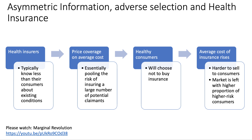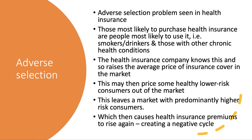If healthy consumers leave the market or don't enter it, you're left with a higher proportion of people with chronic conditions. The average cost of insurance goes up, making it harder to sell to consumers. The market is then left with a higher ratio of increased-risk consumers. A dominance of high-risk consumers drives up health insurance premiums — those most likely to buy health insurance are those most likely to use it: heavy smokers, heavy drinkers, people with chronic illness including diabetes or obesity.